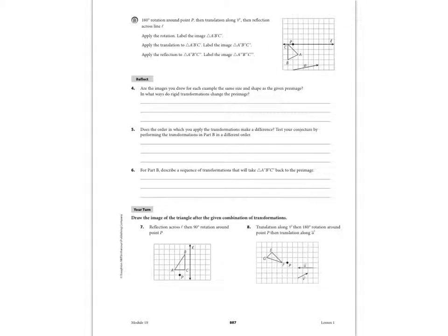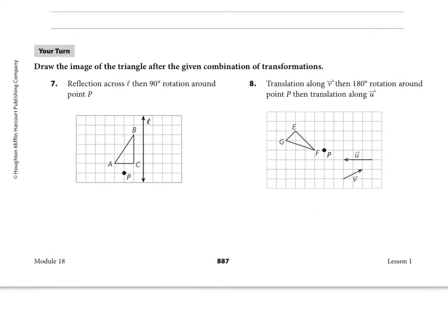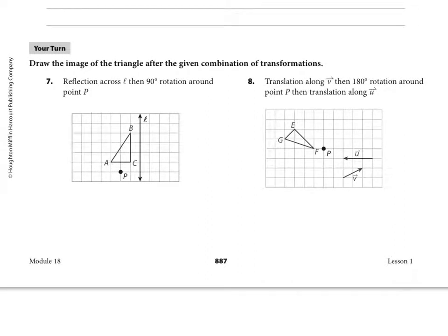So on page 887, let's go straight to an example. Number 7, I'll try this one out and then I want you to think about number 8. We're going to draw the image of the triangle after the given combination of transformations. Sequence of transformations or combination of transformations is the same thing. It just means we're taking a pre-image and doing more than one transformation to it. We're only doing rigid motion - translations, reflections, and rotations. Number 7, we're going to reflect across L and then rotate it 90 degrees around P.